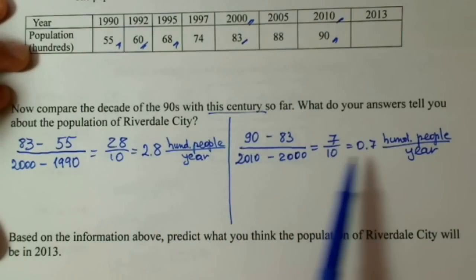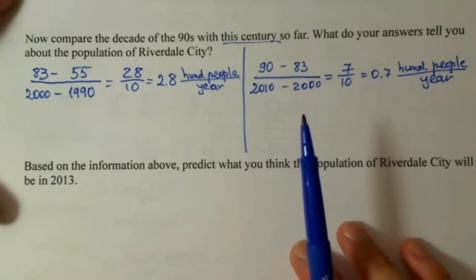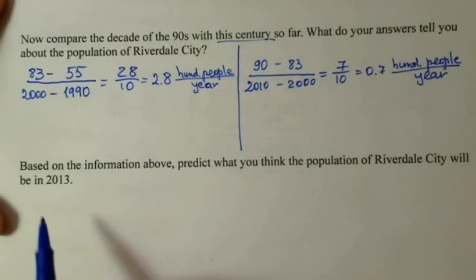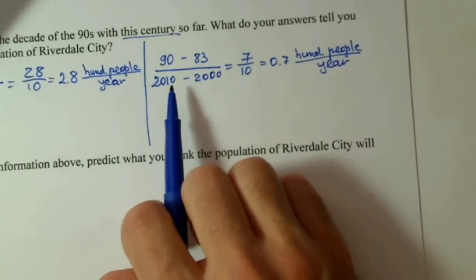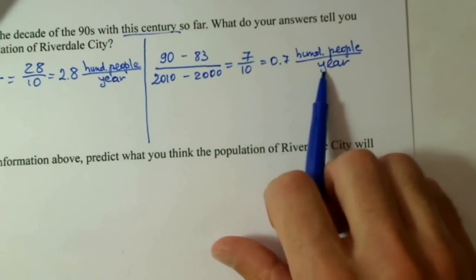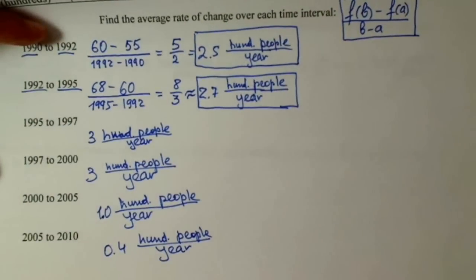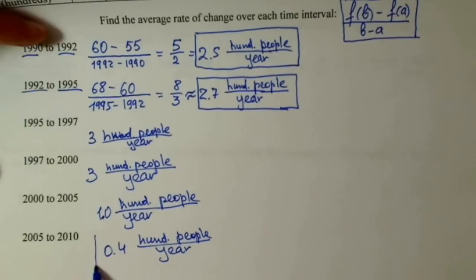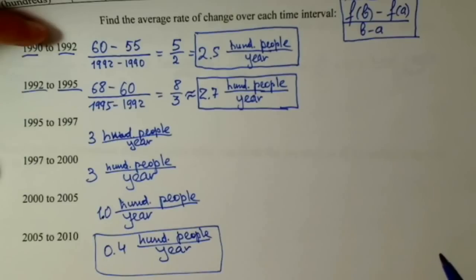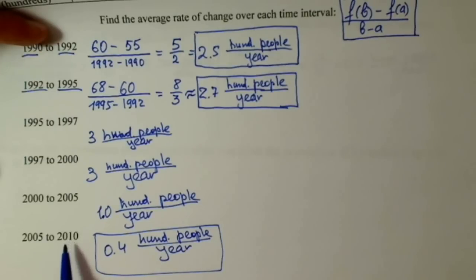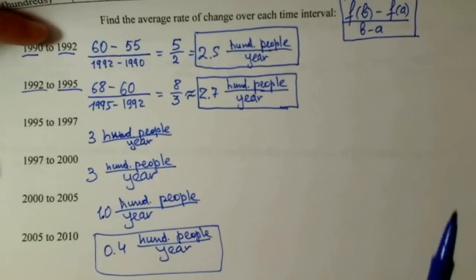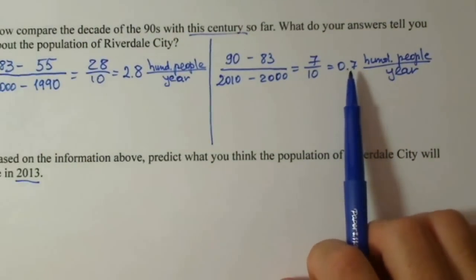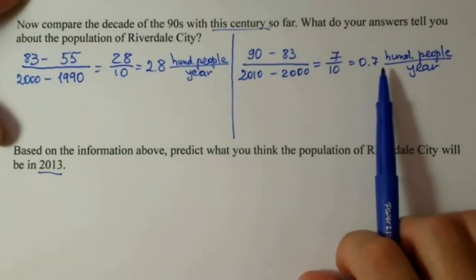Based on this information and the previous results, we now need to predict the population in 2013 in Riverdale City. We can see that for the full 2000s decade the average rate of change was 0.7 hundreds of people per year, and for the shorter interval from 2005 to 2010 it was 0.4. Which one should we use?